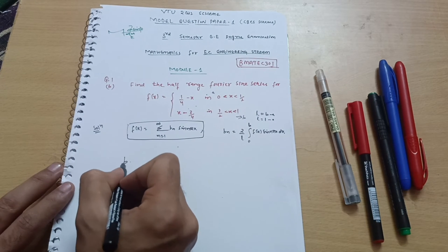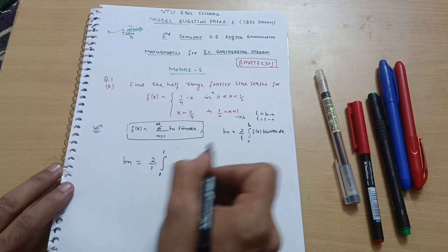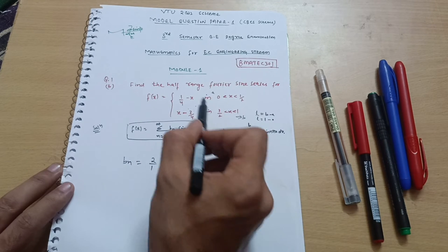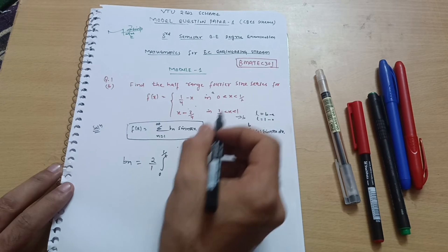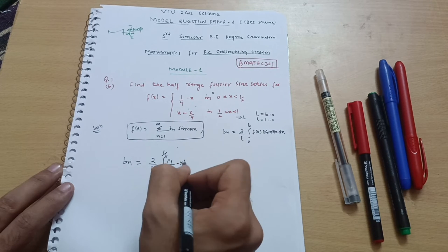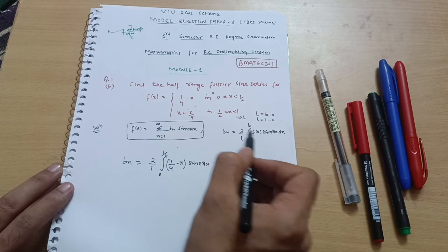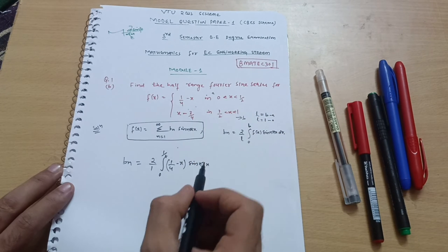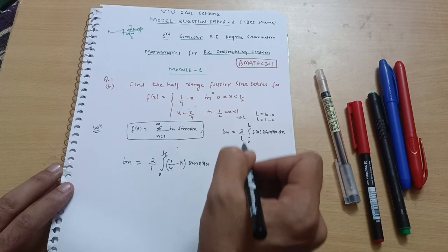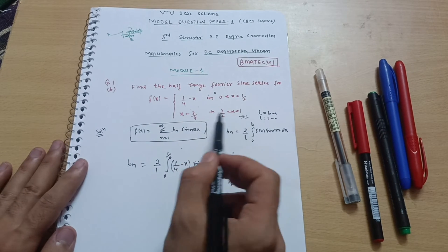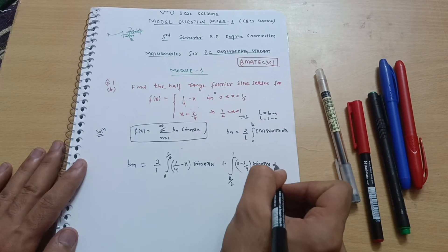Now let us solve this. b_n = (2/1) × integral from 0 to 1 of f(x). Since there are two intervals, I can break this into two functions: the first integral from 0 to 1/2 with function (1/4 - x) times sin(nπx), and a second integral from 1/2 to 1 with function (x - 3/4) times sin(nπx) dx.